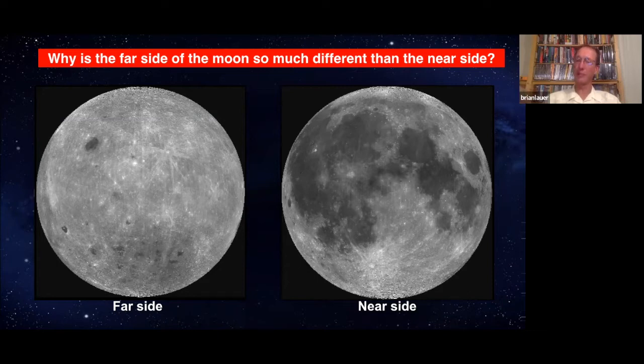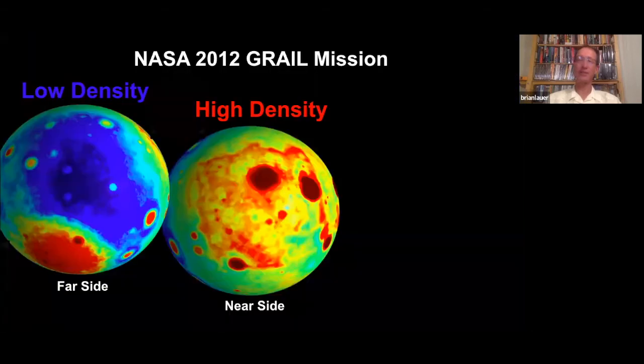There's a lot more lava flows and a lot more moonquakes on the near side as opposed to the far side. And there's a lot more density on the near side as opposed to the far side, which is counterintuitive.